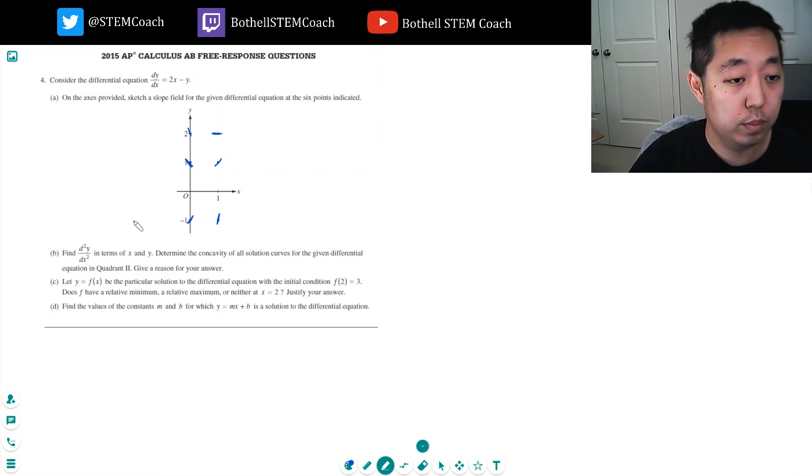Okay, pretty straightforward. All you do is you take each of the x and the y coordinate. This is the point 0, 2 and I just plug it in here. What's 2 times 0 minus 2?